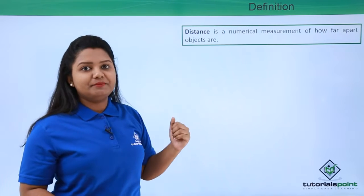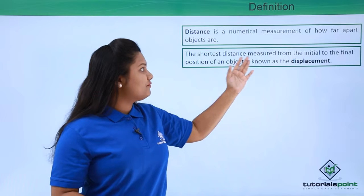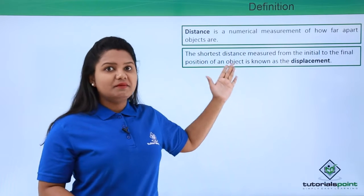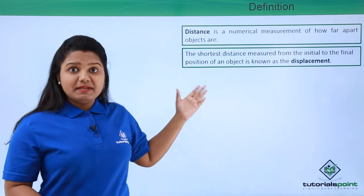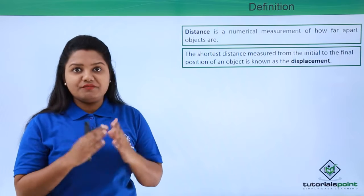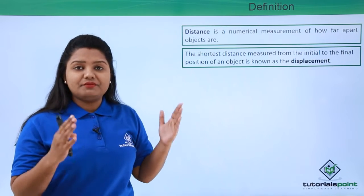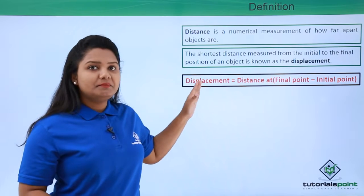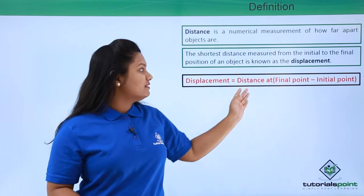The shortest distance measured from the initial to the final position of an object is termed as displacement. Displacement depends only upon the initial and final position of a body and is irrespective of the path chosen. So the formula for displacement becomes: distance at the final point of the body minus distance at the initial point of the body.